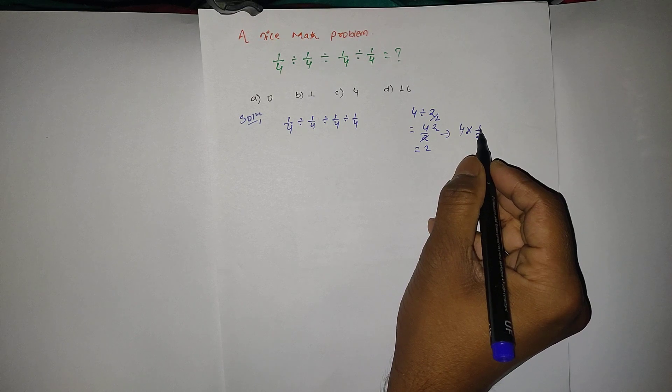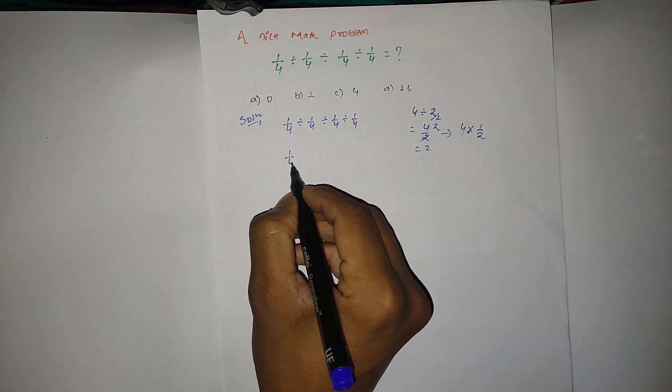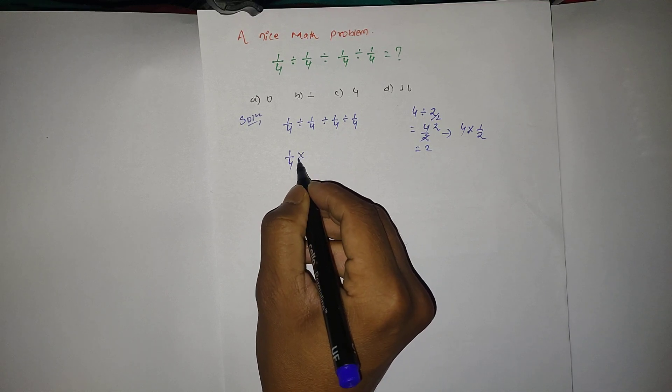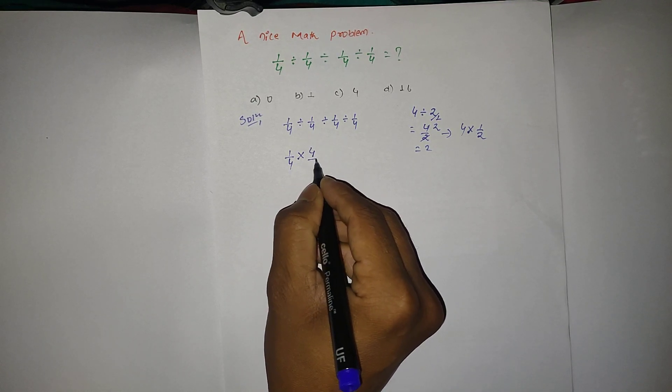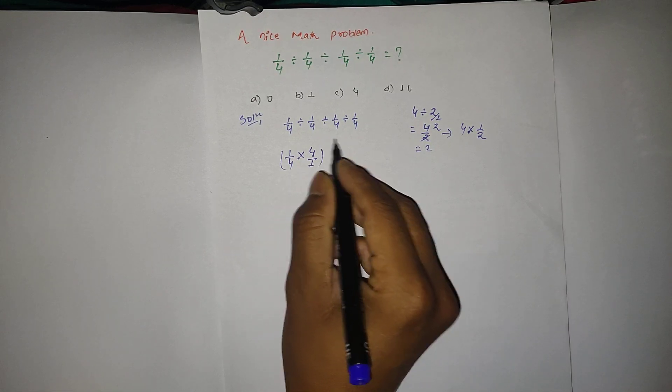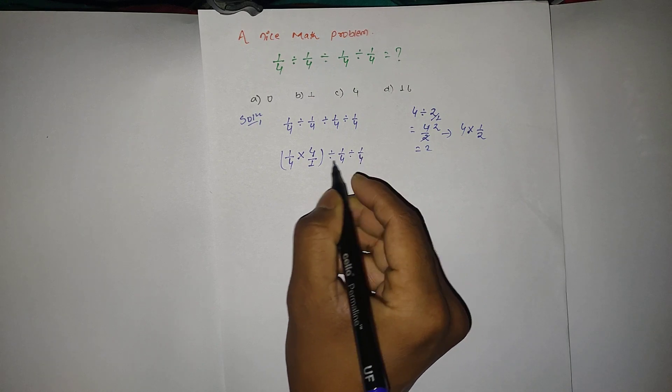1/4 - if I change this divide into multiplication form, you can flip this number to 4/1. The rest is the same: 1/4 ÷ 1/4. So here, this 4 and this 4 will get cancelled and the remaining is...